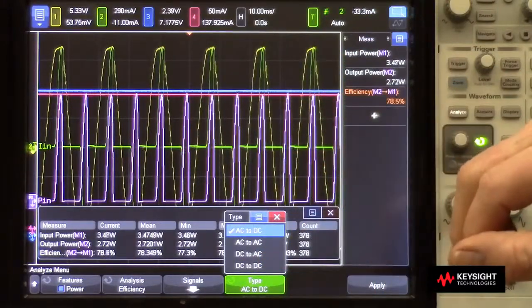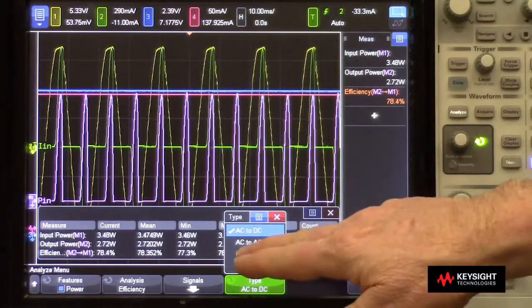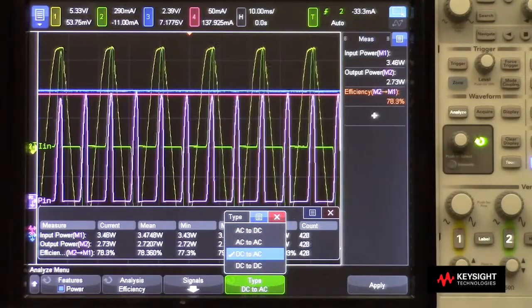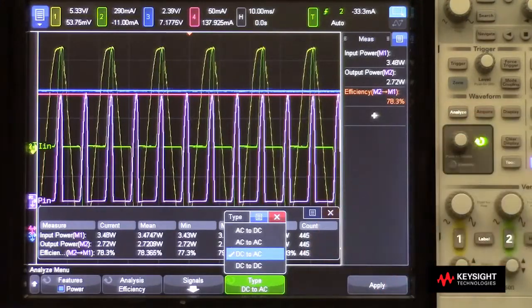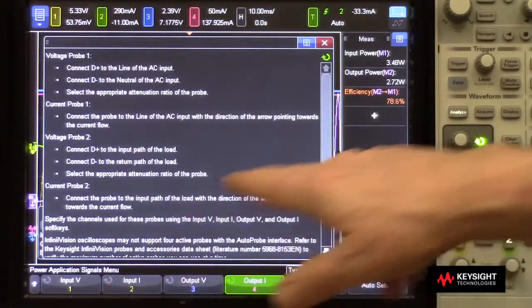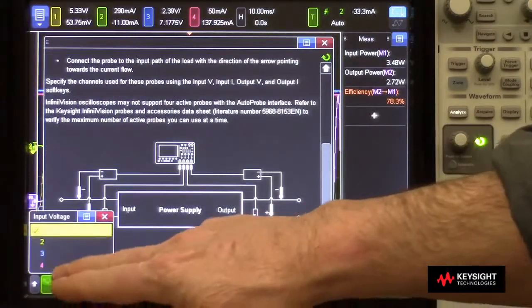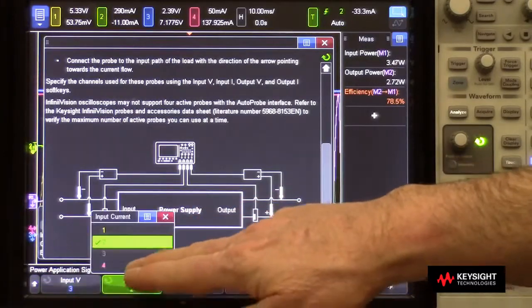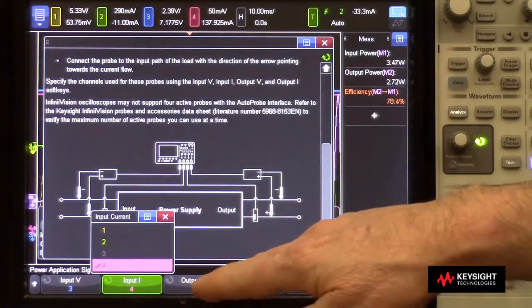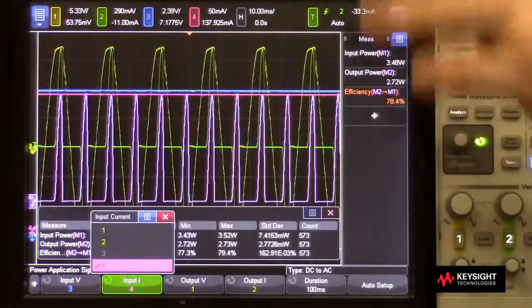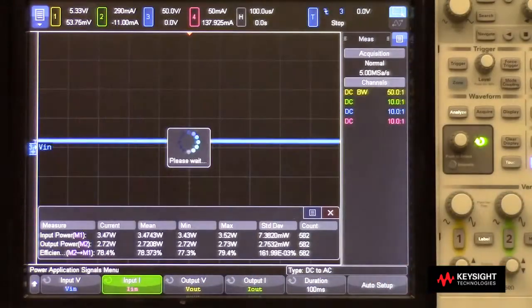But let's assume we have an inverter, which converts DC to AC, and we're going to use our same setup here. I'm going to redefine the inputs. So I'm going to say that the input voltage is channel three, current is channel four, output voltage is one, output current is two. Let's go through another auto setup.